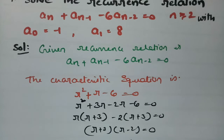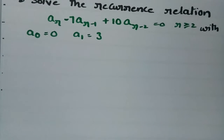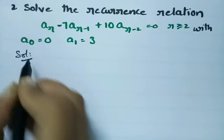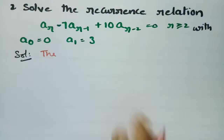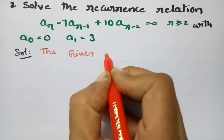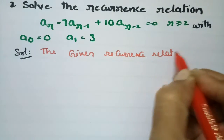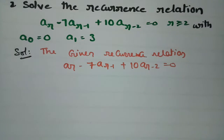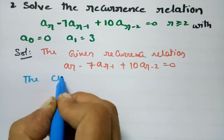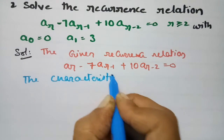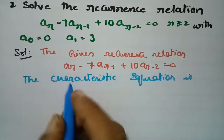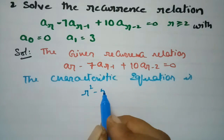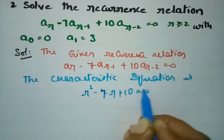There is another question: Solve the recurrence relation Ar - 7·A(r-1) + 10·A(r-2) = 0, with initial conditions A0 = 0 and A1 = 3. The given recurrence relation is Ar - 7·A(r-1) + 10·A(r-2) = 0. The characteristic equation, of order 2, is R² - 7R + 10 = 0.